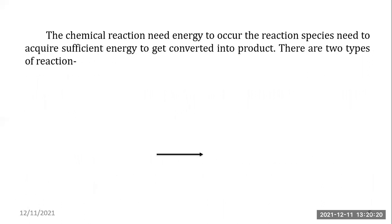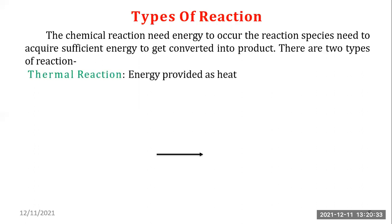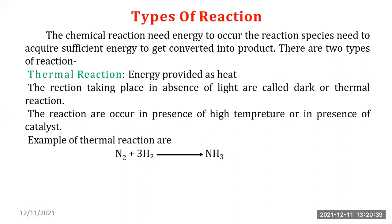The chemical reaction needs energy to occur. The reacting species need to acquire sufficient energy to get converted into products. There are two types of reaction. The first is thermal reaction, where energy is provided as heat. Reactions taking place in the absence of light are called dark or thermal reactions. These reactions occur in the presence of high temperature or a catalyst.